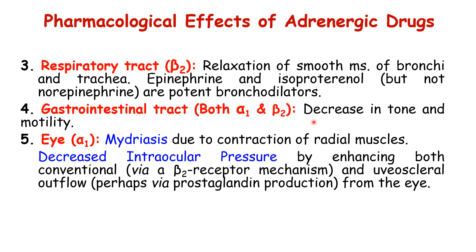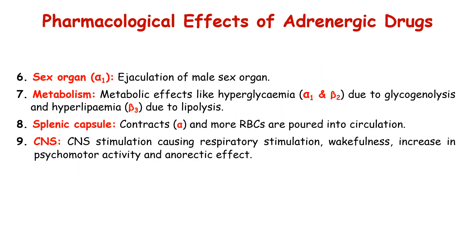For the GIT, adrenergic drugs decrease the tone and motility of GIT smooth muscles, mediated by alpha-1 and beta-2 receptors. For the eyes, adrenergic drugs induce mydriasis or pupillary dilation due to contraction of the radial muscles, mediated by alpha-1 receptors. For metabolism, adrenergic drugs produce hyperglycemia — an increase in blood glucose — mediated by alpha-1 and beta-2 receptors.